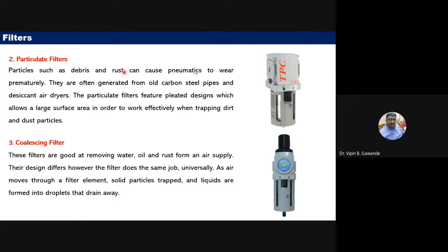The second type is the particulate filter. Particles inside the pneumatic system cause wear and tear. They are often generated from old carbon steel pipes and desiccant air dryers. Particulate filters provide a large surface area to efficiently trap dirt and dust particles, preventing wear and tear of the system.